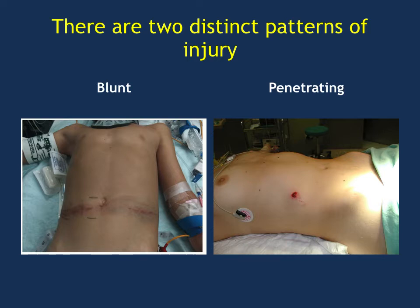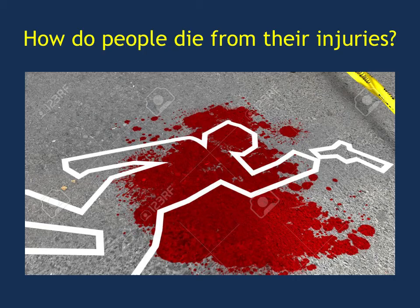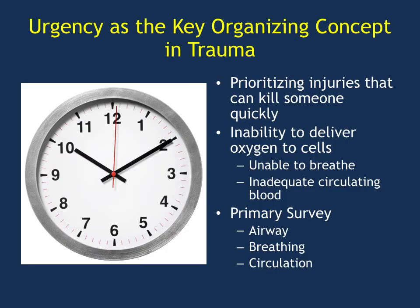Something that smashes and breaks things may injure different things versus something that penetrates and cuts through in a more focused manner. So how do people die from their injuries? People think people die from bleeding, which is true. People do die from bleeding, but you have to think about more than just bleeding when you think about a trauma patient, because we have to prioritize what actually kills the patient immediately versus what ultimately is the source or the cause of death.